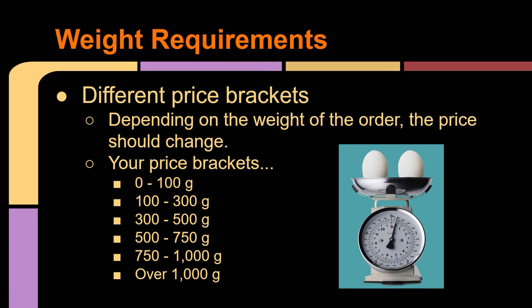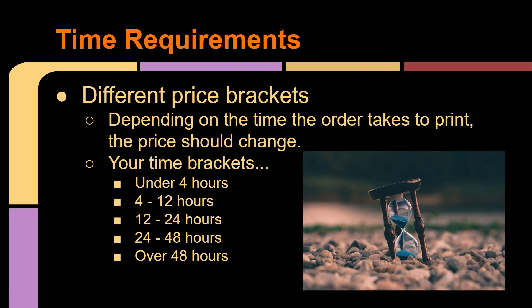Remember that if we're working in grams, 1,000 grams is simply one kilogram — so our rolls come at one kilogram per roll. If it's over 1,000 grams, that means you have to use an additional roll of filament. There are also different price brackets for the time it takes to print. Your order should cost a different amount based on how long it takes: less than four hours, 4 to 12 hours, 12 to 24 hours, and so on. Use a combination between these two brackets.